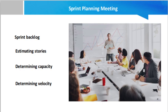Next is determining the velocity. You will want to look at the team's velocity and capacity together. When determining the team's velocity, the Scrum master or product owner should be ready to use examples from the past few sprints or previous projects to indicate how quickly the team usually finishes similar work.